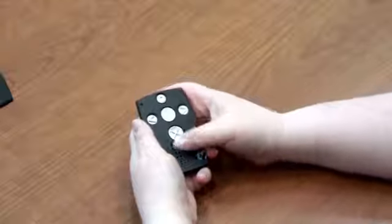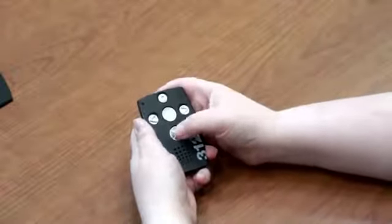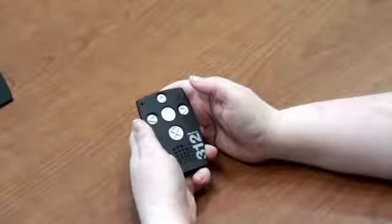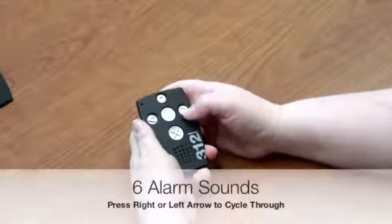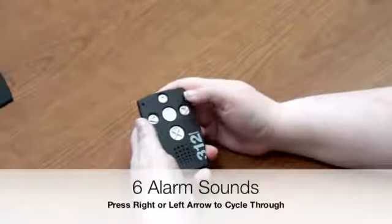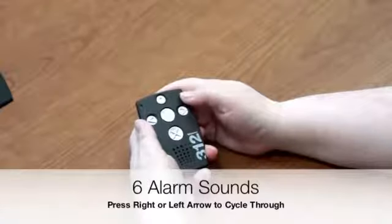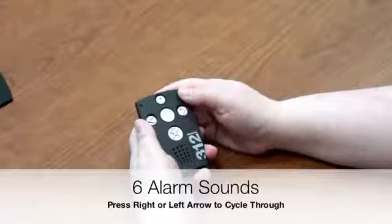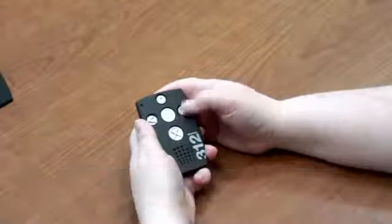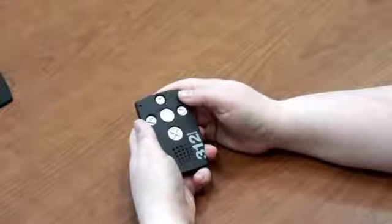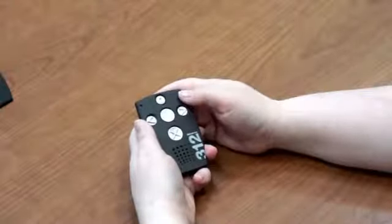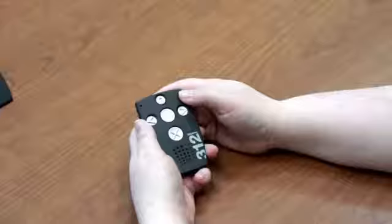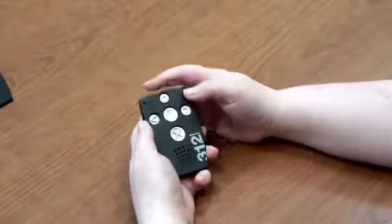Pressing the mode button two more times will allow you to change the alarm sound. Press the right and left buttons to toggle through the six different sounds. Once the alarm has been set and the sound has been selected, you may enter into one of the other functions.